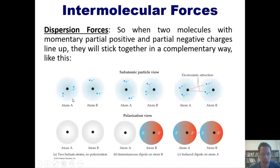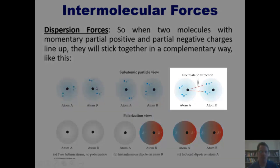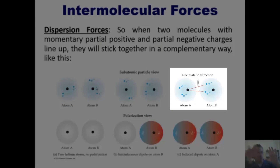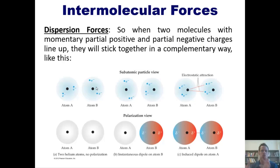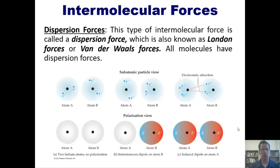When two molecules with these momentary partial positive and partial negative charges line up in a complementary fashion, they can stick together. Imagine atom A and atom B having a brief moment where all the electrons are on one side — creating a momentary partial positive on one side and a partial negative on the other. Once they stick together, the electrons start vibrating back and forth in a complementary way, resonating so that at any given moment the partial positive on one atom is next to a partial negative on the other. This intermolecular force is called a dispersion force, also known as London forces or van der Waals forces.